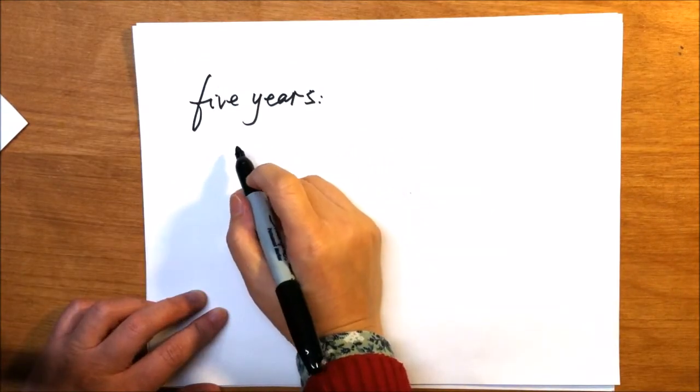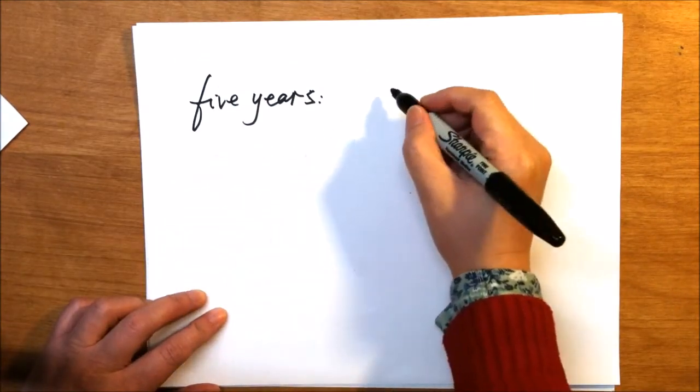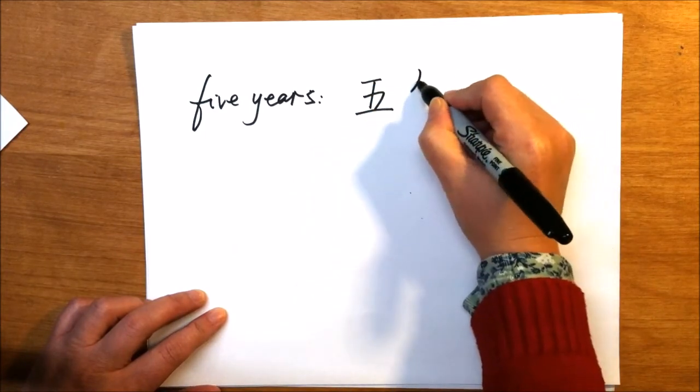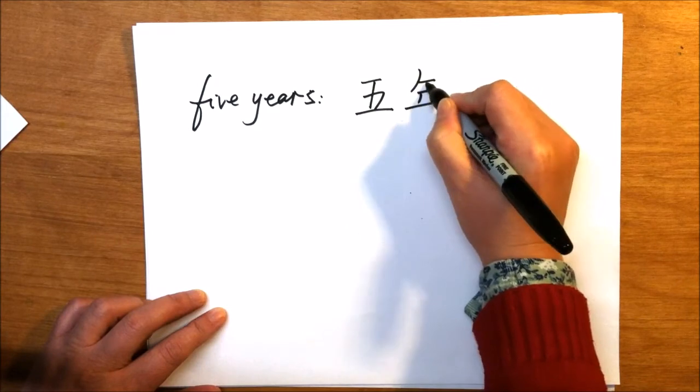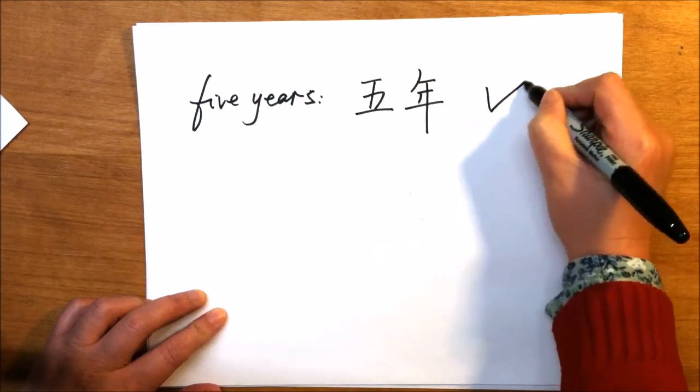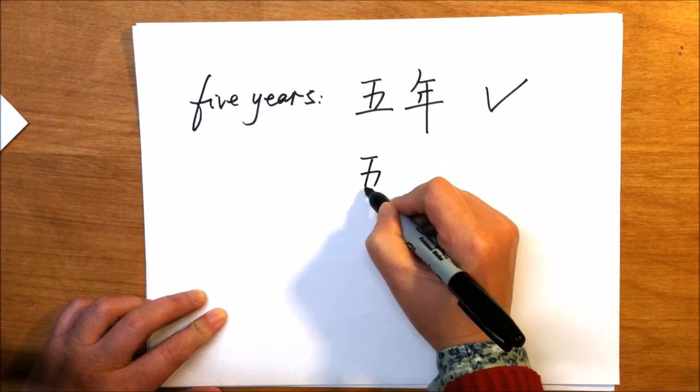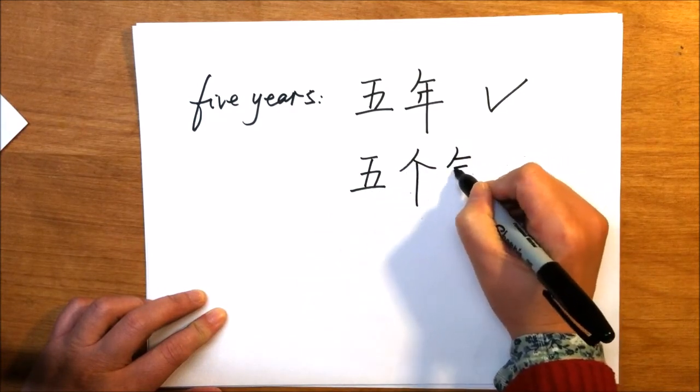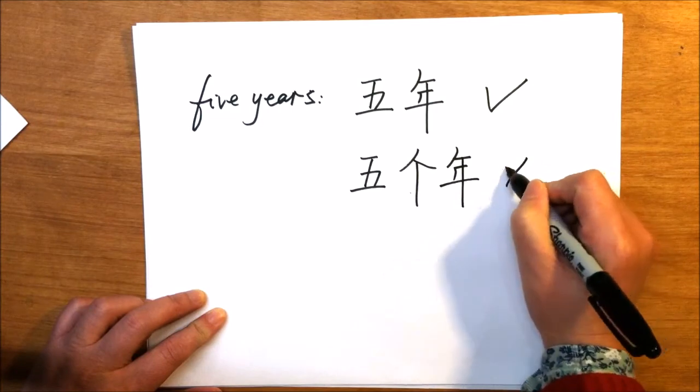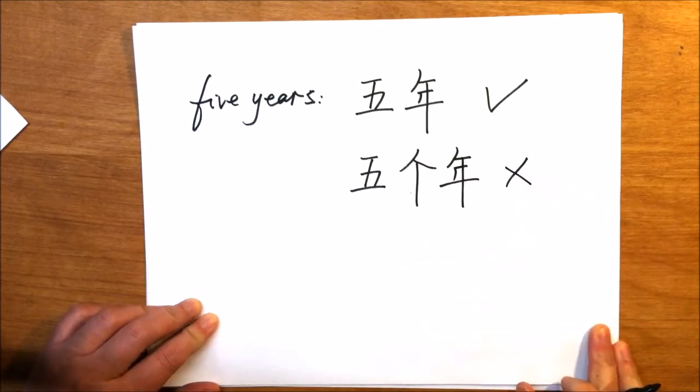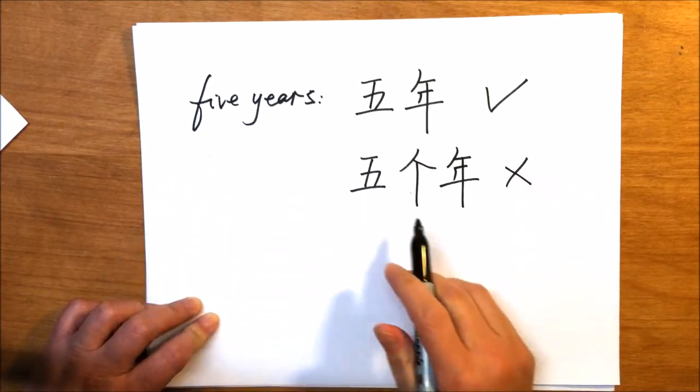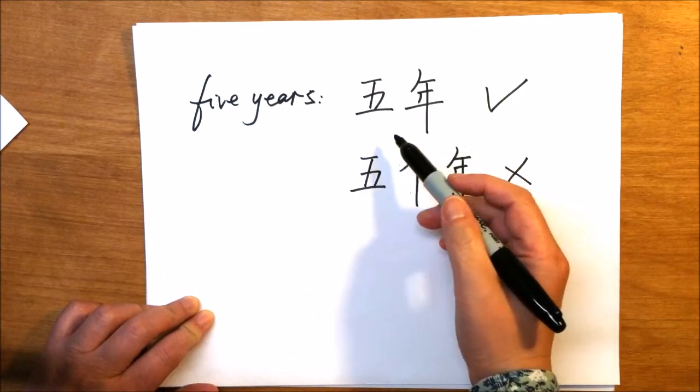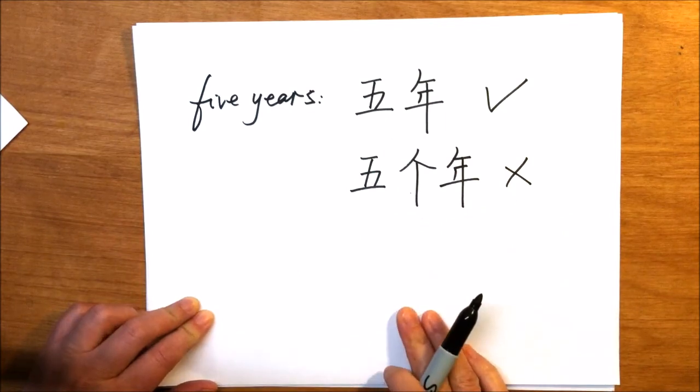How about five years? Five years, 五年, correct. If we add the 个, 五个年, no, that's incorrect. So when we say five years, we cannot say 五个年, that's incorrect. 五年 will be five years.